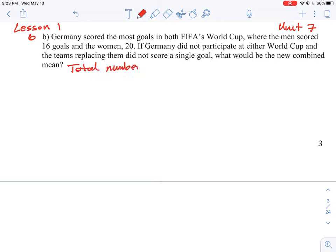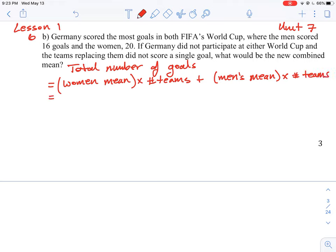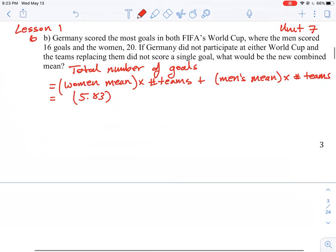Total number of goals. And this number was calculated in part A. But just to go over it again, it is the women's team or the women's mean number that they score times the number of teams and then the men's average or mean times the number of teams. So the data from the previous question says that they averaged 5.83 goals per game for each team.